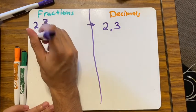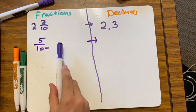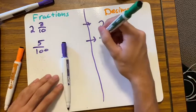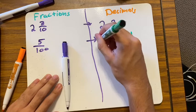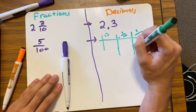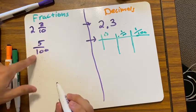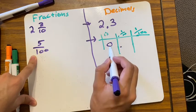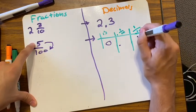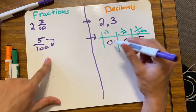Let's do five hundredths. Make a place value chart: ones, tenths, hundredths. Your denominator tells you where your number should go. You have five hundredths, so you don't have any whole numbers. Your five goes into the hundredths place. You don't have anything in the tenths — it's a zero. So the answer is 0.05.